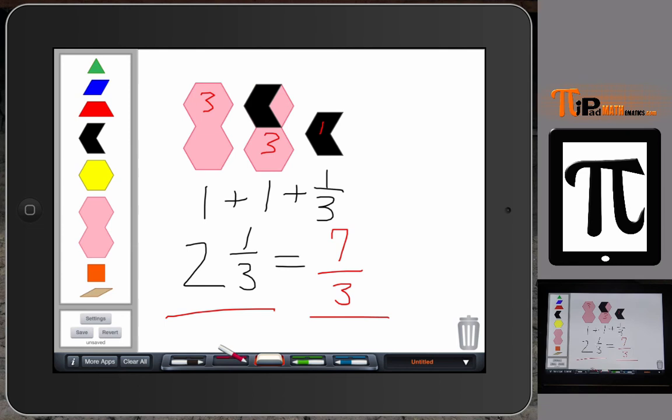So pattern blocks can be used to help model these mixed numbers and improper fractions. Improper fractions meaning the numerator is greater than the denominator. And it becomes improper when you think about it in terms of, say, like eight out of five dentists like Crest Toothpaste. Well, you only have five dentists, so you can't have eight out of five.